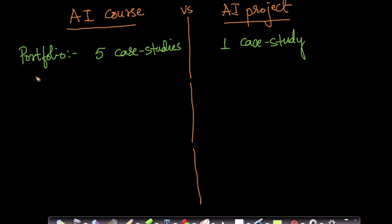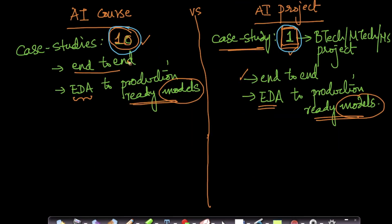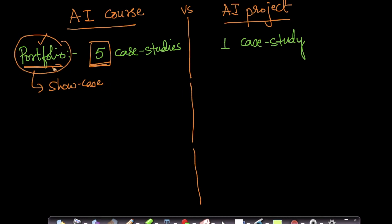The next difference is in terms of portfolio. At the end of the AI course, you go through 10 case studies, and you also solve five problems on your own to build your portfolio — which you can showcase to companies during hiring. For the AI project, since you solve one problem, you will get a portfolio with one case study.